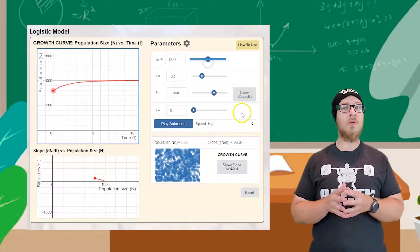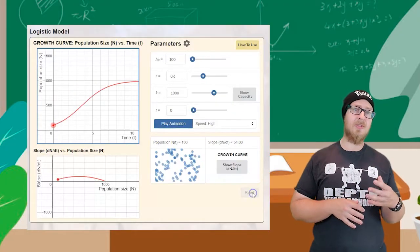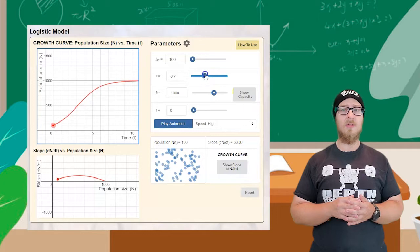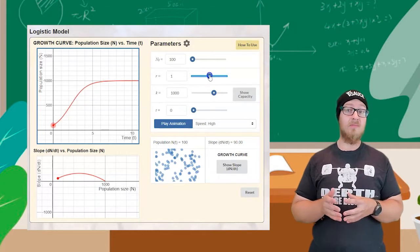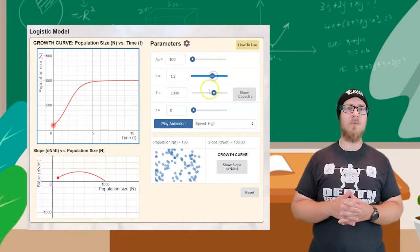The greater the size of the original population, the faster the carrying capacity is reached. The higher the growth rate, the faster the population reaches its capacity.